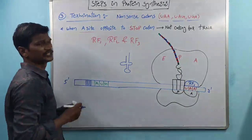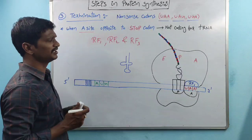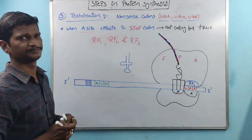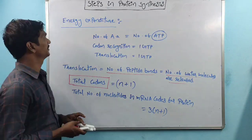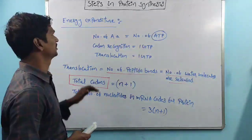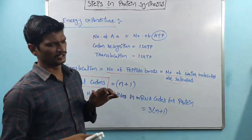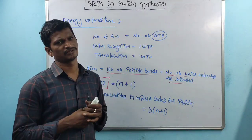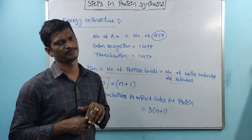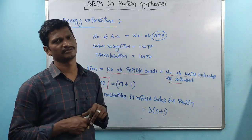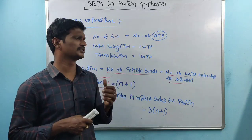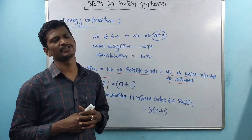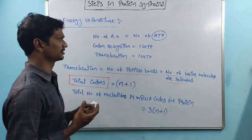That is about the termination of the protein synthesis process. We are coming to the next topic: energy expenditure. This means, during the protein synthesis process, a certain amount of energy is utilized. We are counting at which stages energy utilization takes place in protein synthesis.